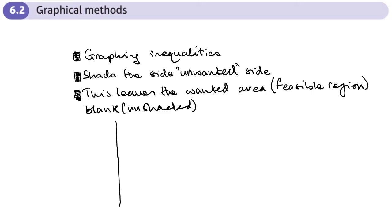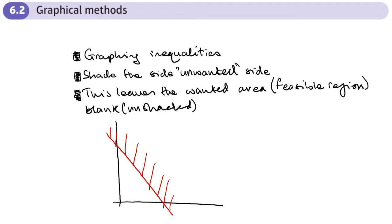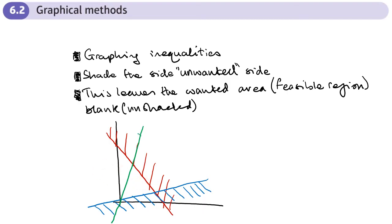Imagine these are the axes. We draw an inequality line, and let's say the area we actually want is below it — but we shade the area we don't want above it. Then another inequality line: we want above it but shade below. A third inequality: we want one side, shade the other. What we're left with is the gap in the middle — the feasible region — and we often label that R.